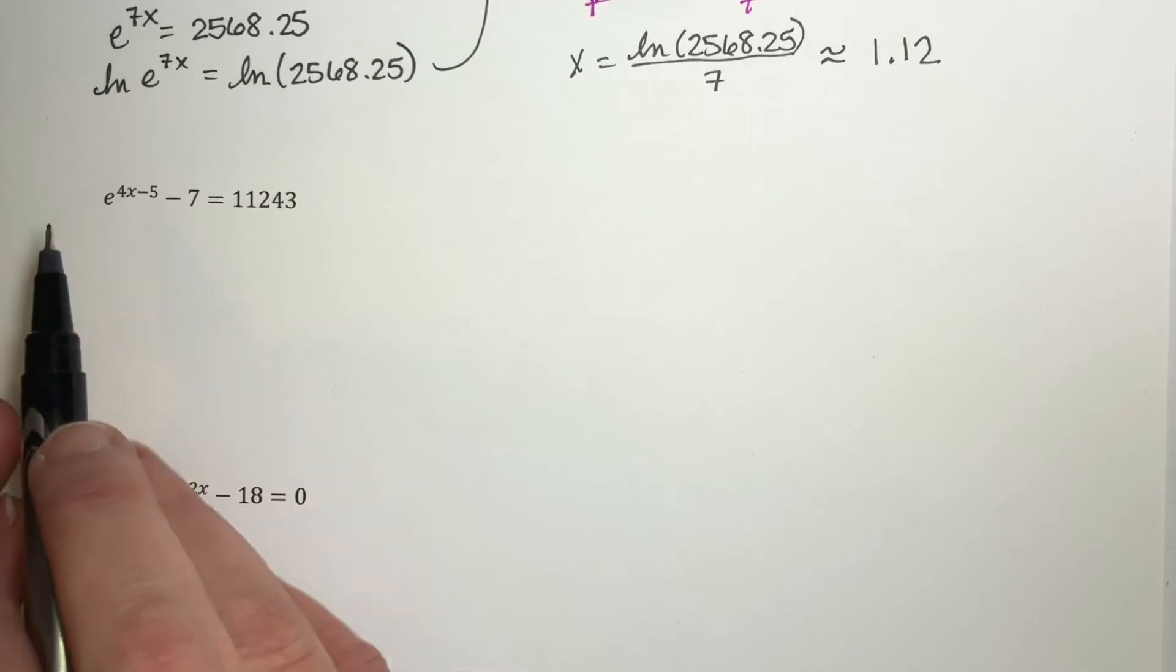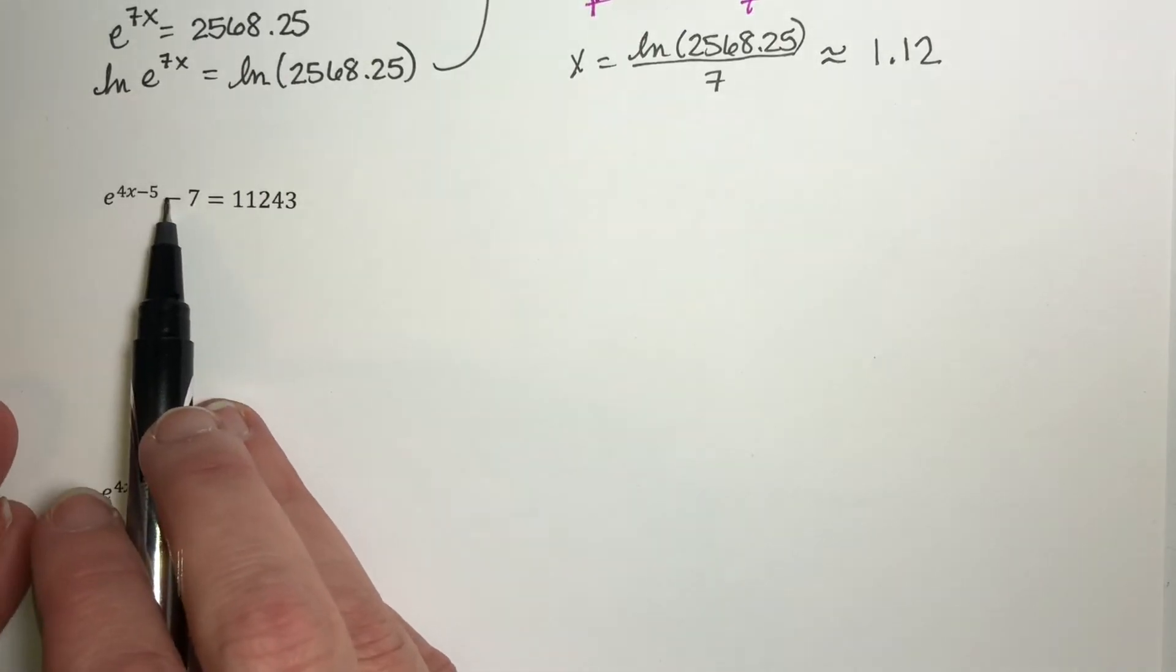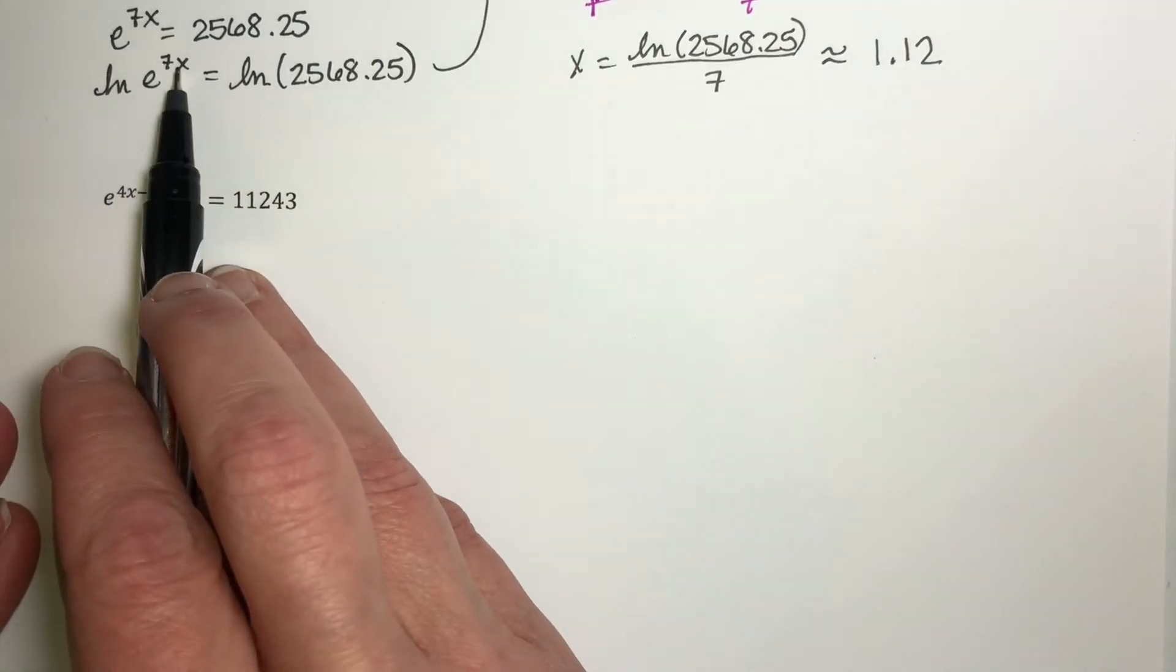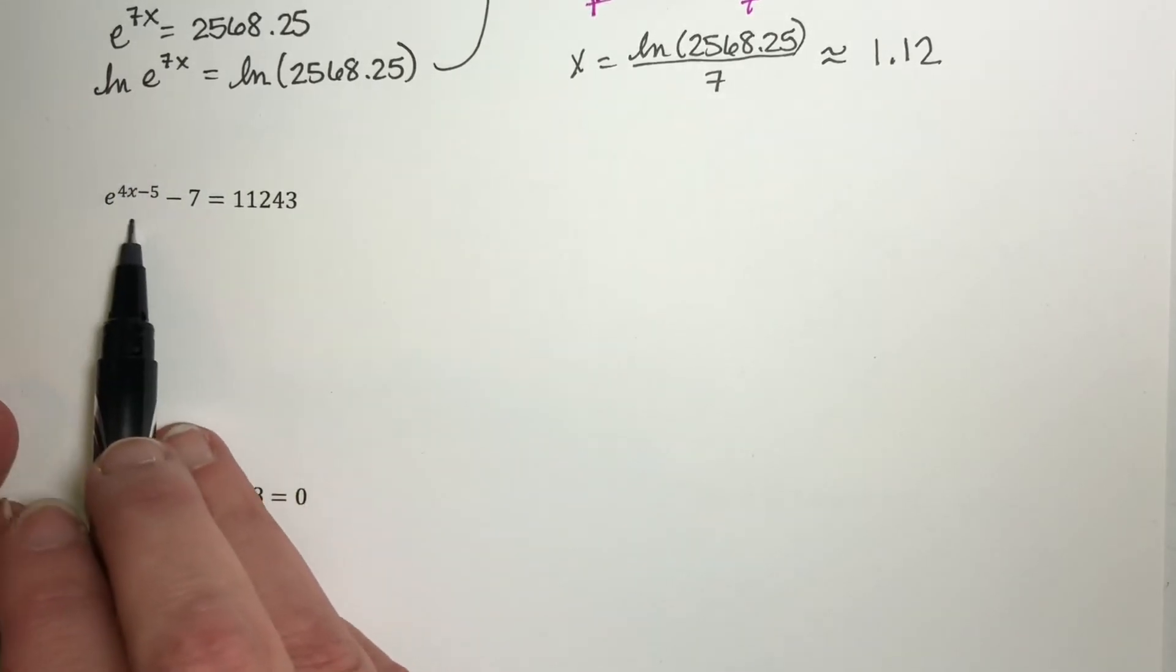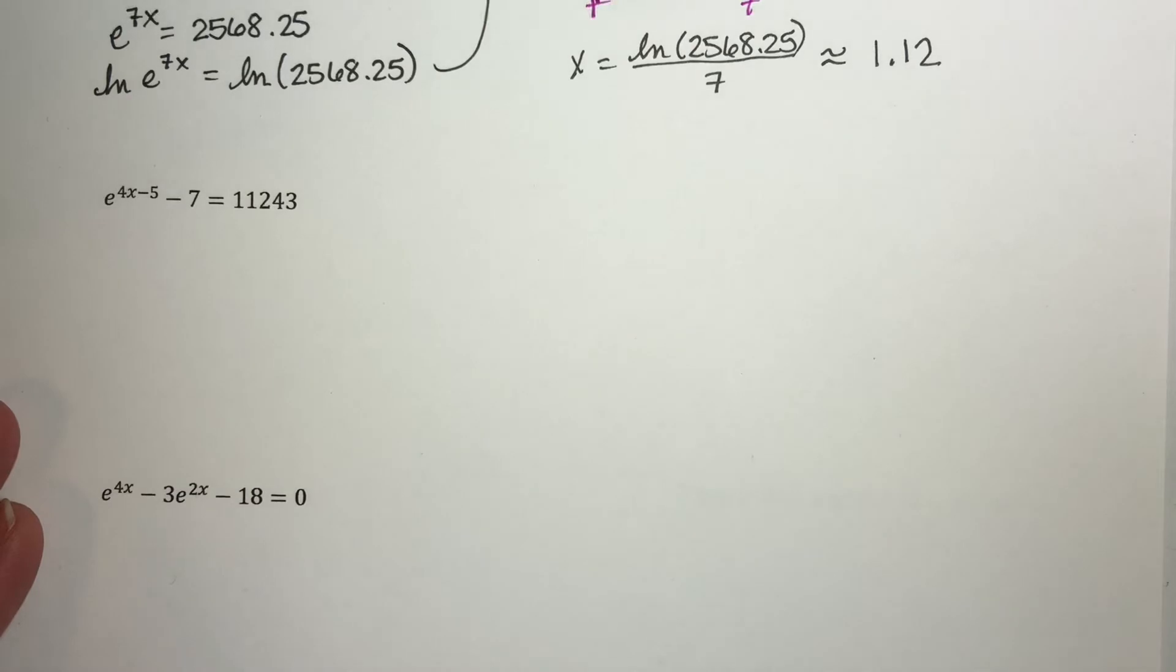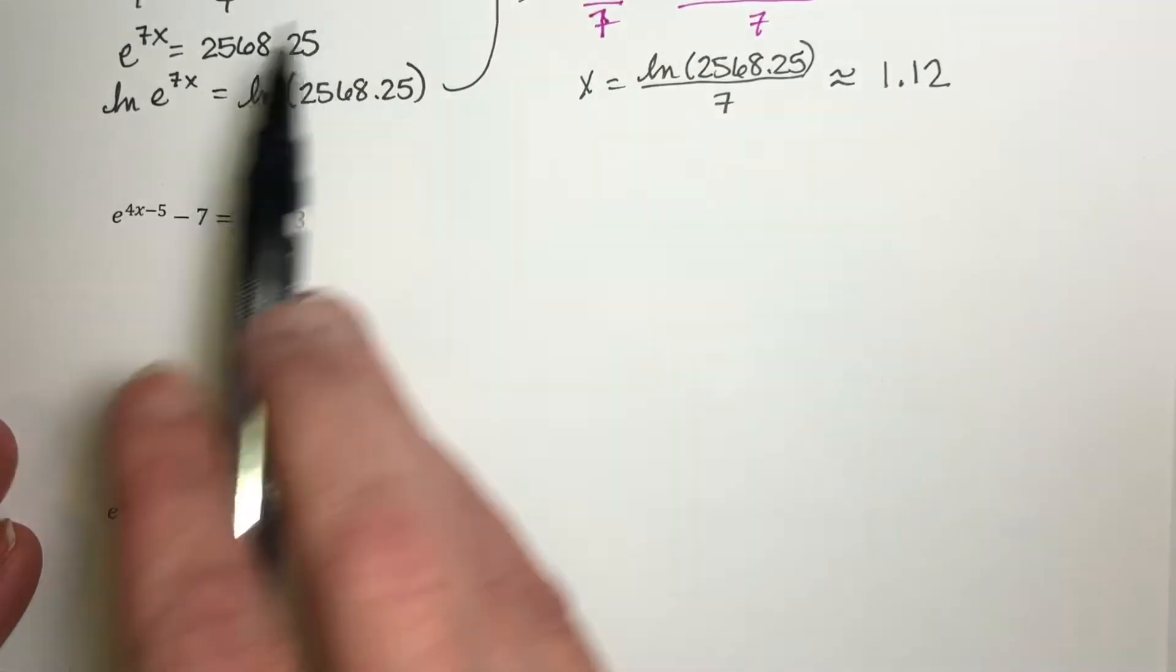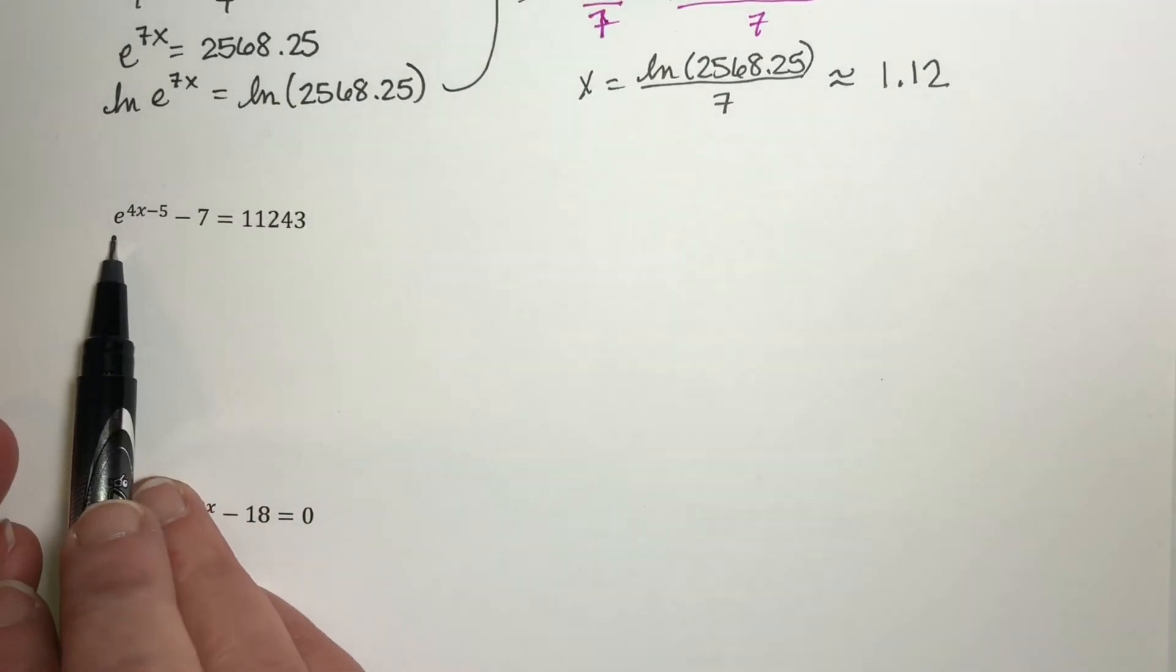This one is kind of similar. Our exponent is more complicated, but it's going to work essentially the same way this one did. We're going to end up taking natural log of both sides, and then we'll just have this exponent, and we'll be able to solve pretty easily for x.